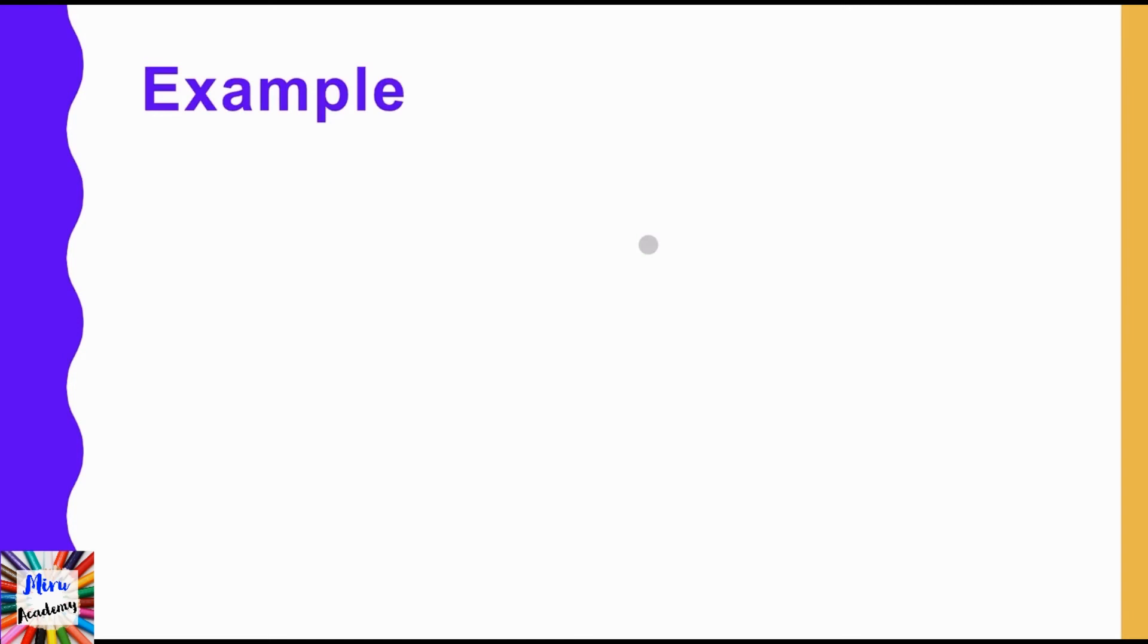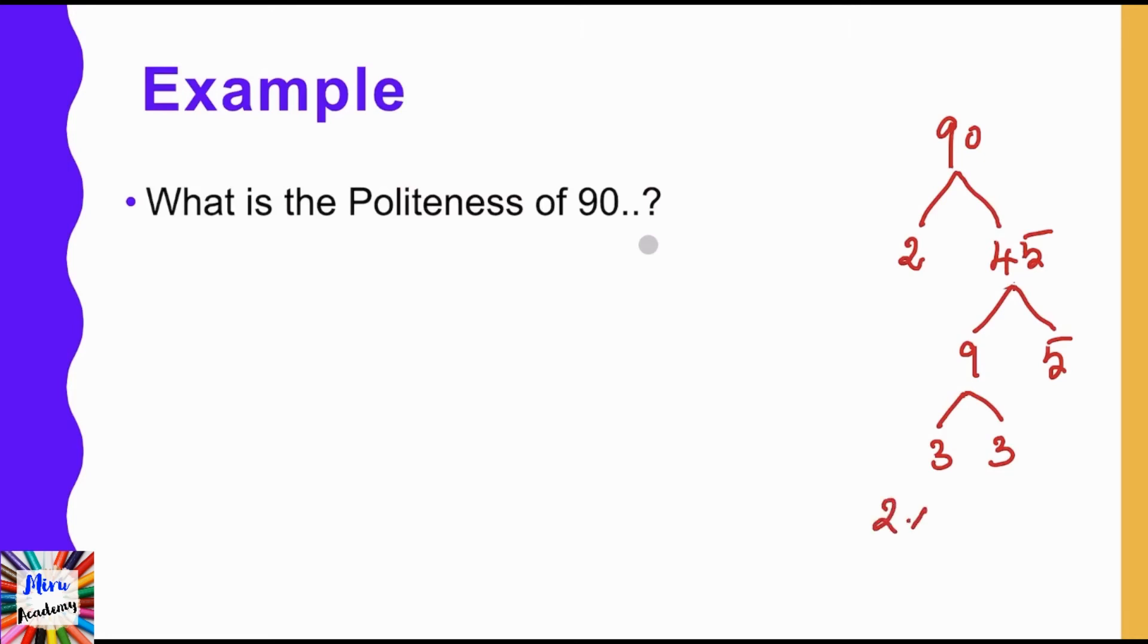We will see this with an example. What is the politeness of 90? So first step is to find out the prime factors of 90. So that is, 90 can be written as 2 into 45, and 45 is 9 into 5, and again 9 can be written as 3 and 3.